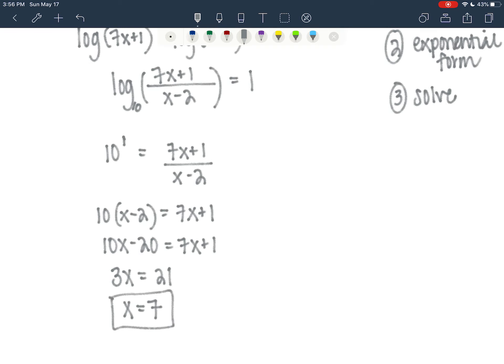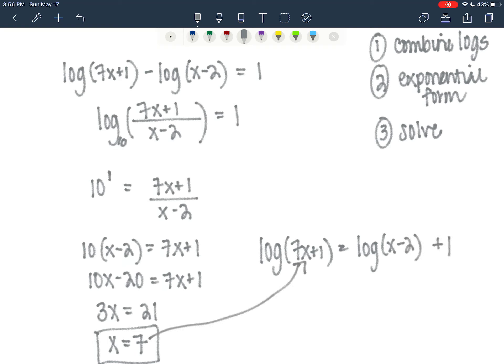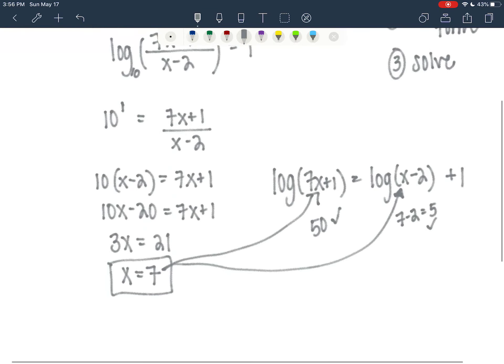I'm going to check to make sure that 7 does not cause a problem in the original equation, which was log of 7x plus 1. We put a 7 in. When I put 7 into the first argument, we get 50, and 50 is a positive number, so that works. When we put 7 into the next argument, 7 minus 2 is 5, and that is a positive number.